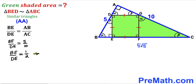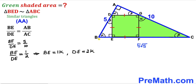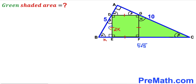Since the ratio BE to DE equals 1/2, we assign BE = k and DE = 2k for some constant k. Since DEFG is a square, all side lengths are equal, so DE = EF = FG = GD = 2k.